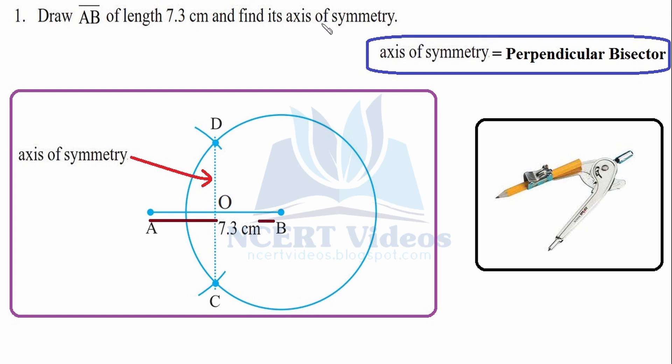Now find its axis of symmetry. The axis of symmetry is nothing but the perpendicular bisector, so keep this in mind.